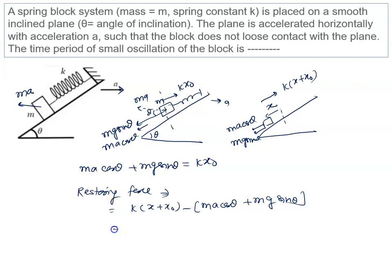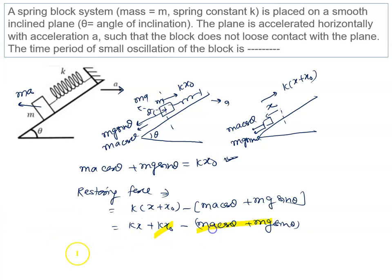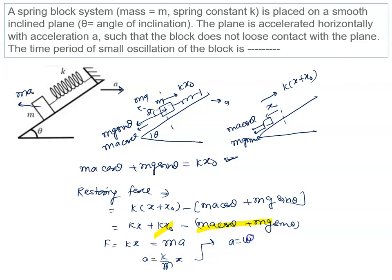When we expand the bracket, we get k x naught minus (ma cos theta + mg sin theta), plus kx. Using the equilibrium equation, k x naught cancels with ma cos theta plus mg sin theta. So the net restoring force is simply kx. Comparing with ma, we get acceleration equal to (k/m) times x. Comparing with the standard SHM equation a = omega squared times x, we get omega = root(k/m).